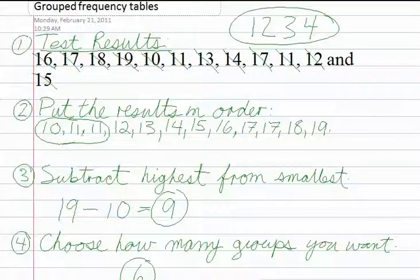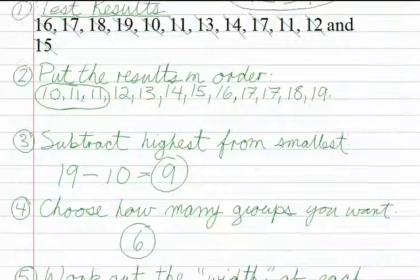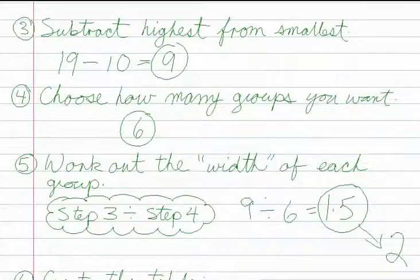Now go to step three, which says subtract. In this case, we're subtracting the highest mark, which is 19. We're taking 19 and we're subtracting 10, which should leave us with 9.